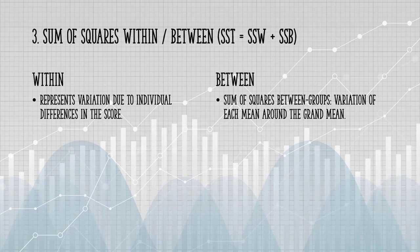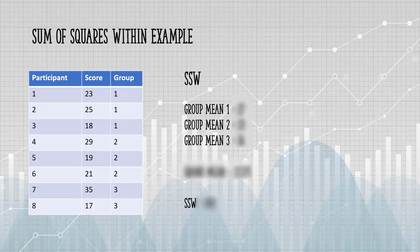Sum of squares within represents variation due to individual differences in the score. Between sum of squares is the variation of each mean around the grand mean. These sound very similar, but the meaning should become clearer if we work through an example.